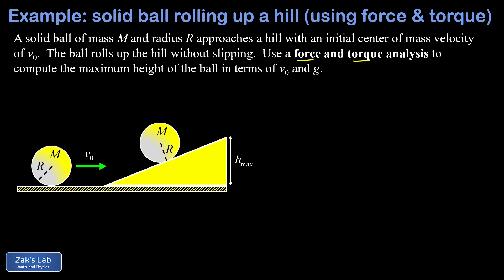We're given a very general symbolic context here where we have a mass of M and a radius of R and a center of mass velocity of v₀ before the ball encounters the hill. Now we've already solved this problem once before by using energy conservation and I'll post a link to that video at the top. That's actually by far the easiest way to solve the problem.